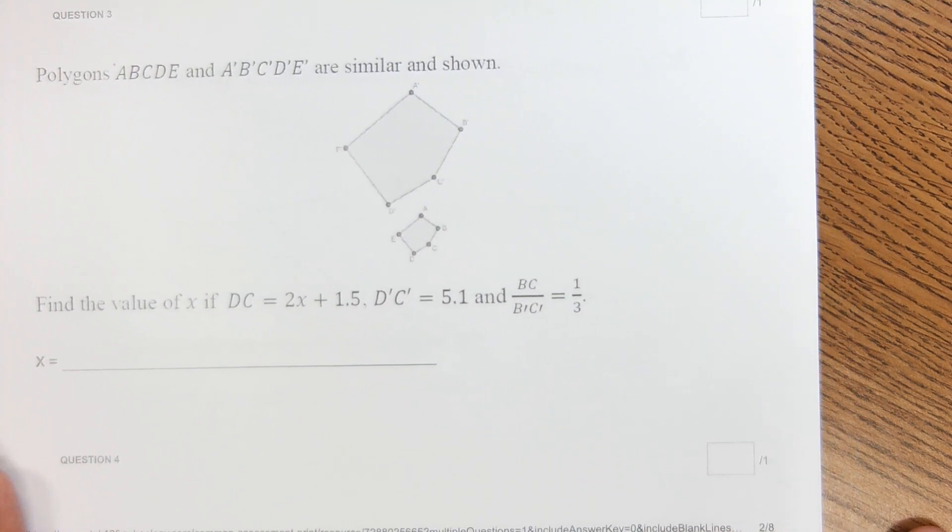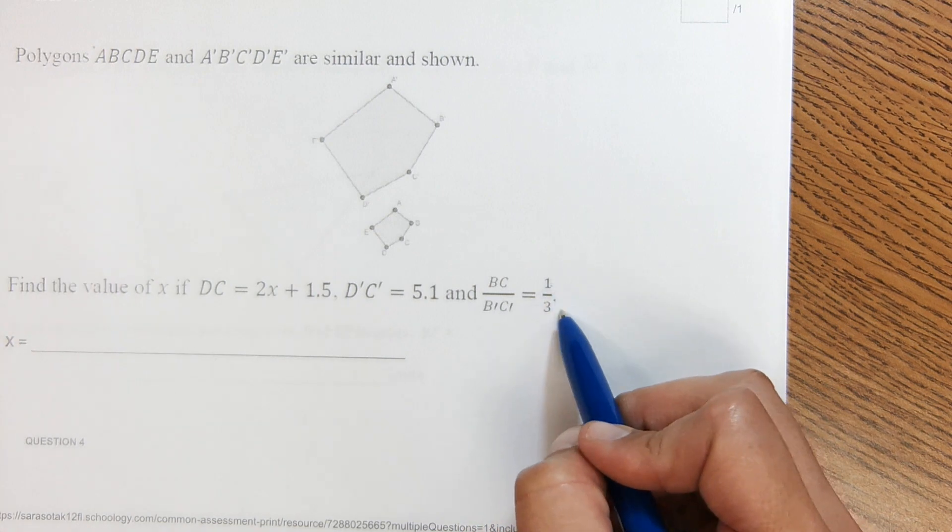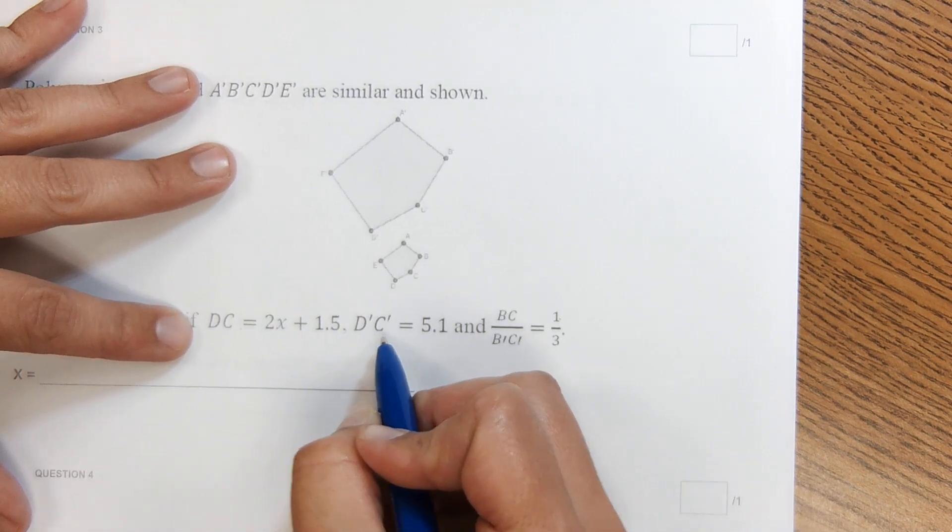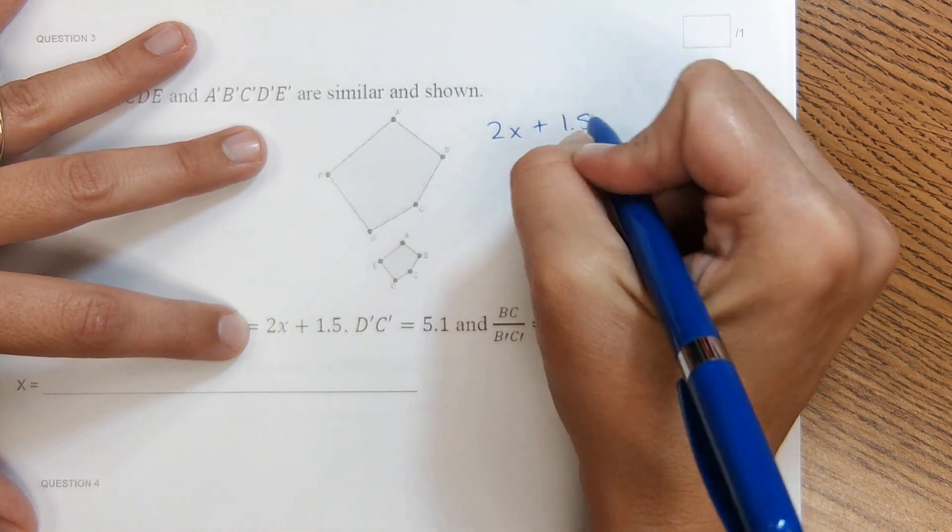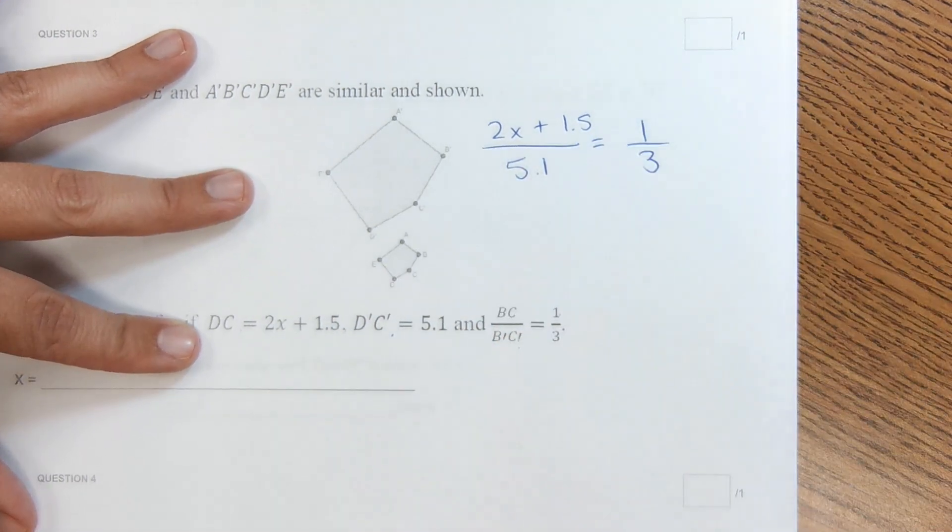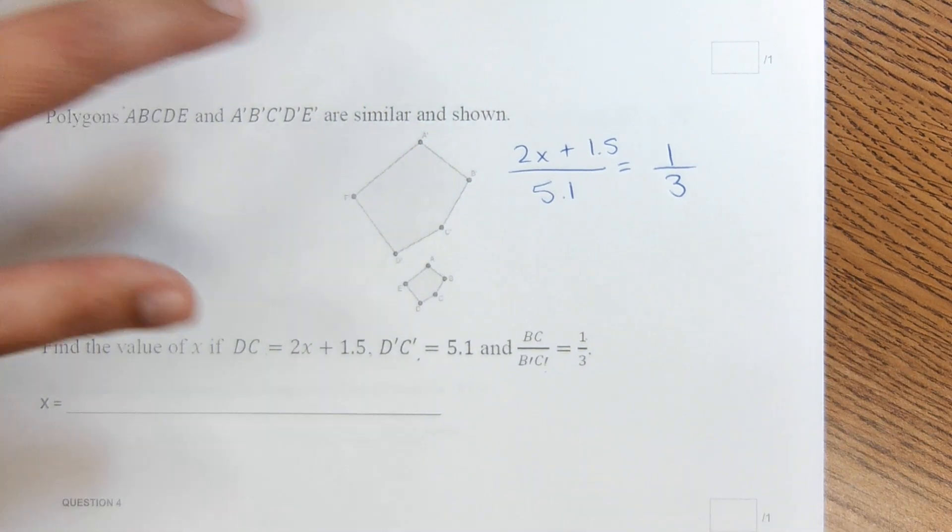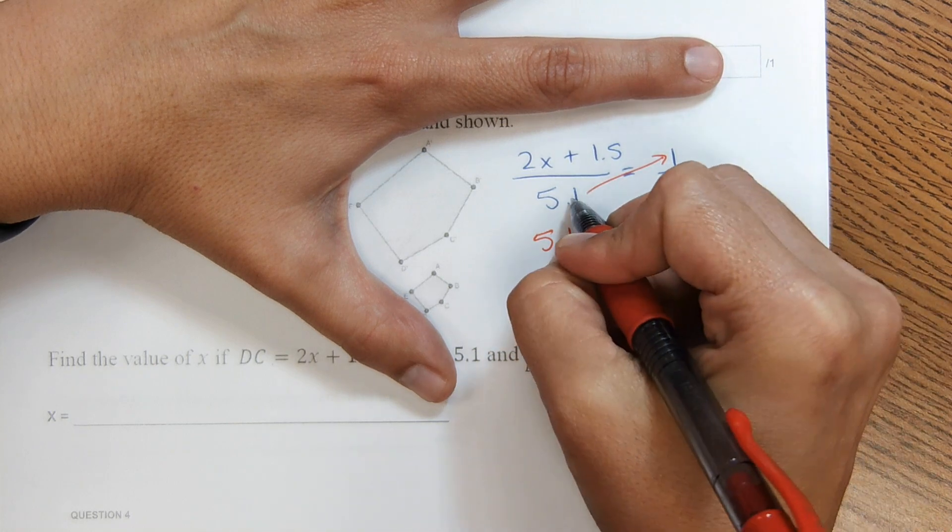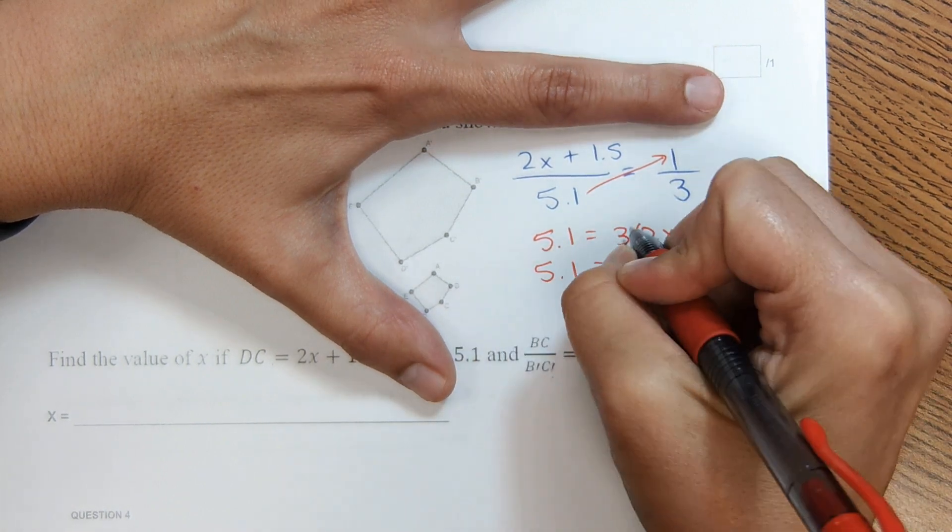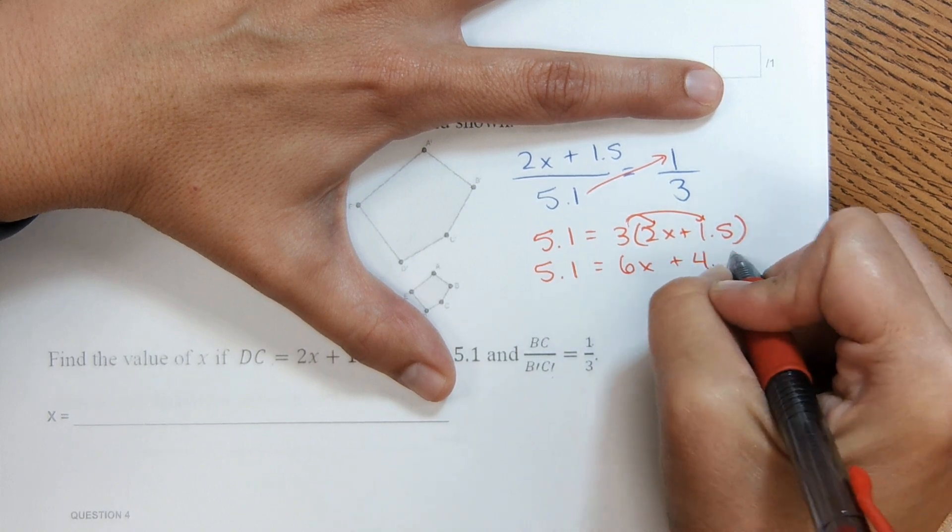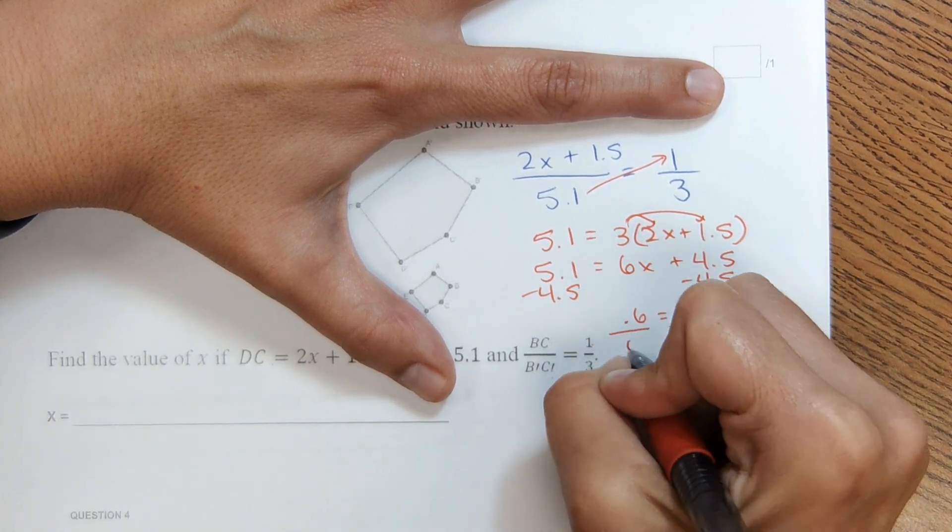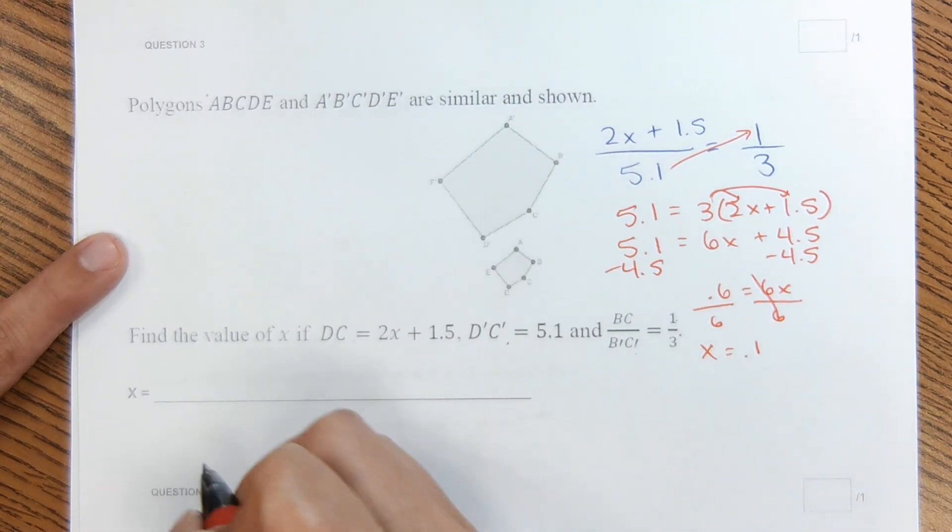The next example, a little bit different. It says that BC to BC prime is in a ratio of 1 to 3. In similar shapes, all the segments should be in that same ratio. So what we're going to do is put DC over DC prime in that same ratio. So 2x plus 1.5 over 5.1. So again, DC over DC prime equals BC over BC prime, which is 1 to 3. And now to solve for x, we can use cross multiplication. So I'm going to cross multiply here. 5.1 times 1 is just 5.1 equals 3 times 2x plus 1.5. And then distribute here by multiplying 6x plus 4.5. 0.6 equals 6x divided by 6. And x equals 0.1. So that is my answer here, 0.1.